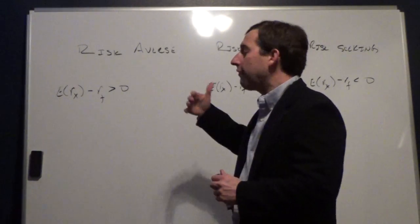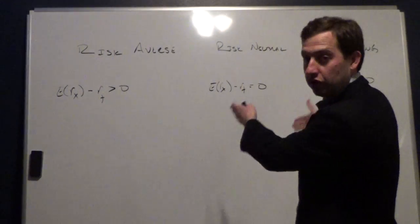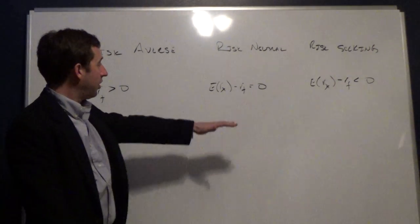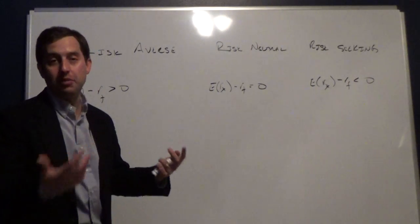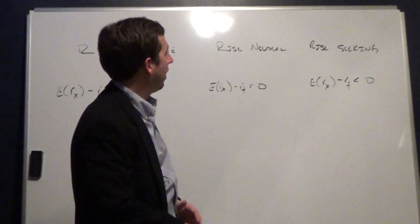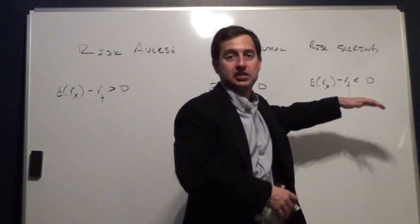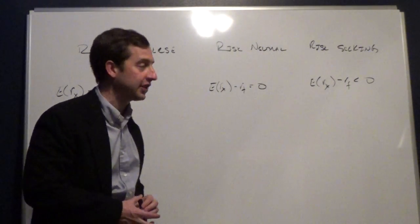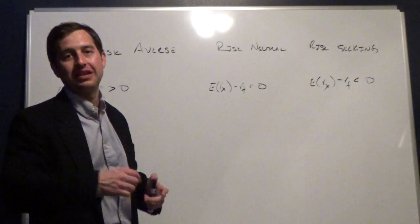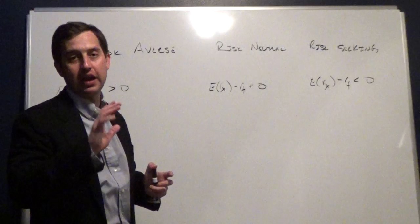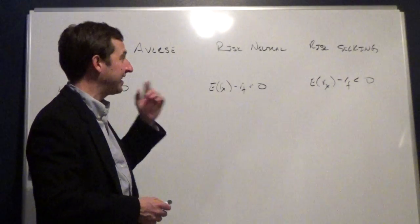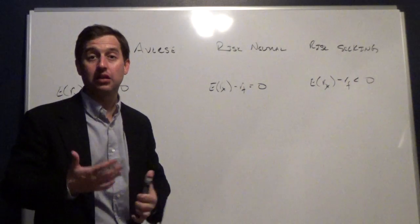We will assume investors are not risk neutral and not risk seeking. Risk neutral means the investor doesn't care about risk — risk doesn't come into play. Risk seeking means an investor will take on risk even if it has the same return as the risk-free rate — they want risk and will take it on simply for the sake of taking on risk. So a risk-seeking investor expecting four percent would still choose that over a risk-free rate of five percent.